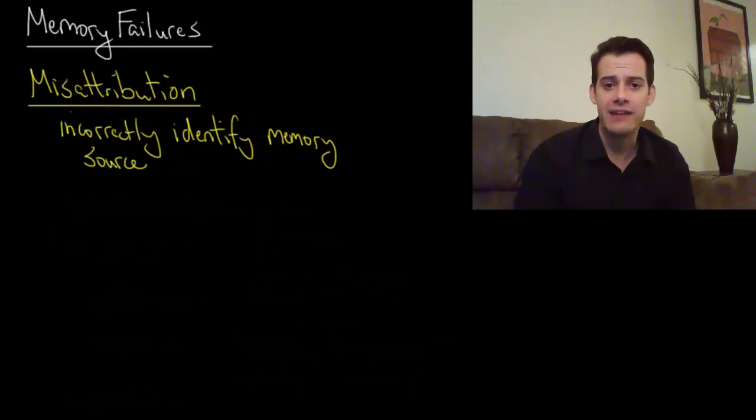So this is the idea that we have a memory and the memory may be accurate but we incorrectly identify where that memory came from. This demonstrates that we have fairly poor source memory. We don't usually remember where our memories come from.